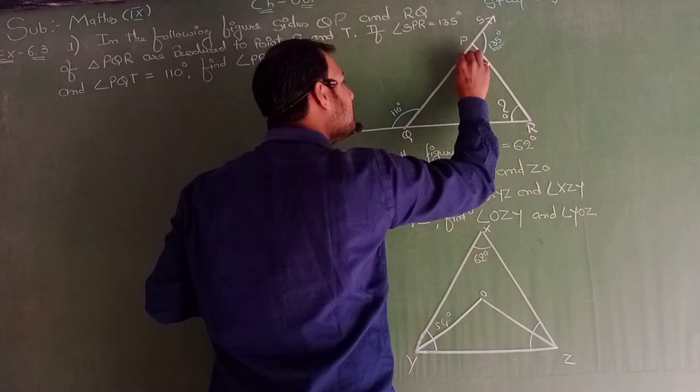This is a straight line, so: 180° = exterior angle PQT + interior angle PQR. Therefore, 180° − 110° = angle PQR. This gives us angle PQR = 70°.